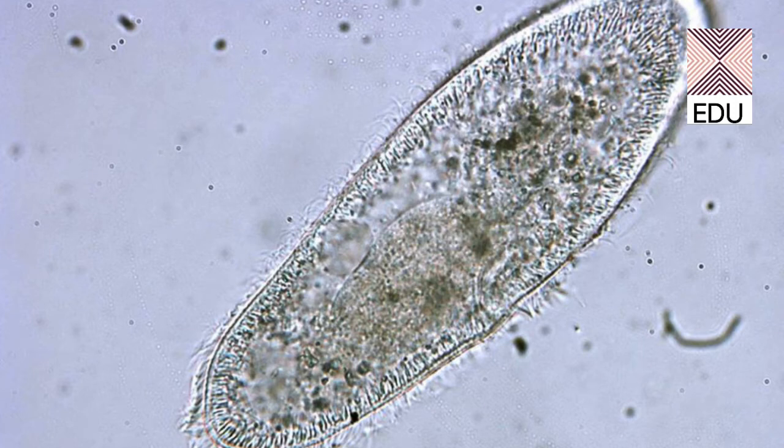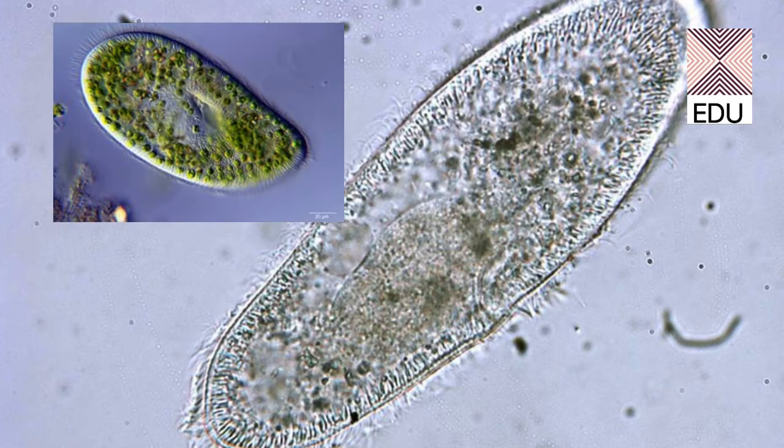As we are studying paramecium caudatum, there is one species which is paramecium burseria that has alga called zoochlorella as a symbiont in its endoplasm. In starvation conditions, it can digest its own zoochlorella.